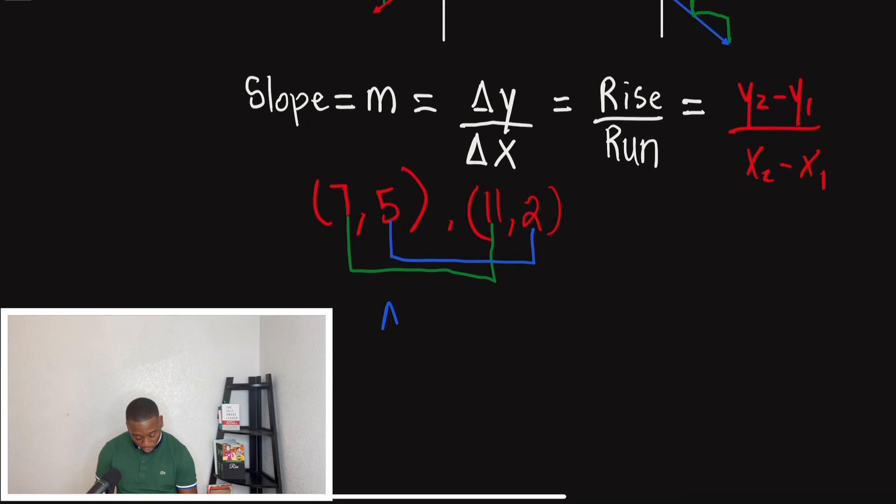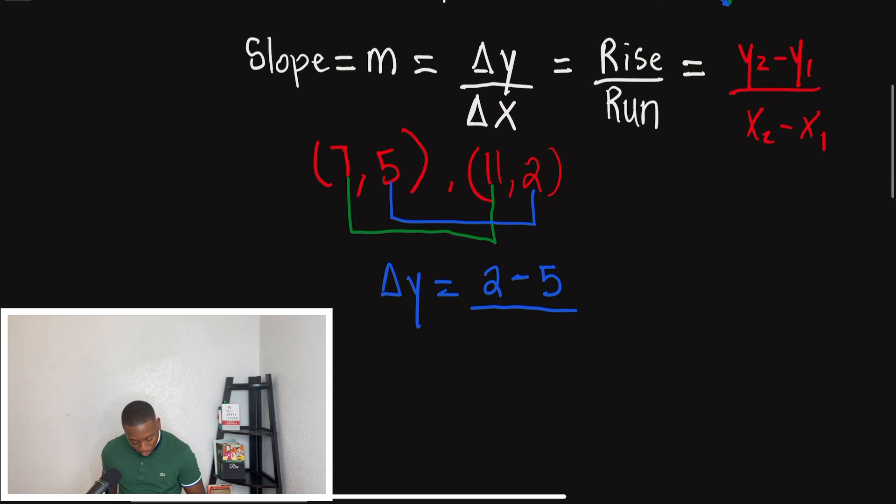And this is what I mean. So when we start off with the change in Y, I'm going to make two Y2. So once I substitute this in, Y2 minus Y1, which in this problem would be two minus five. Now, when I go to do the same thing for X, I have to start in the same parentheses as the two, where two was.